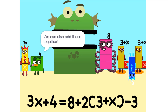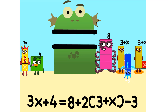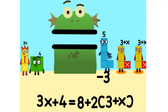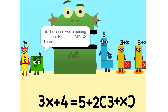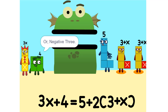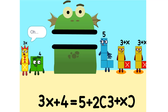We can also add these together. Five. Wouldn't it be 11, since 8 plus 3 is 11? No, because we're adding together 8 and minus 3, or negative 3, so it's five. Oh.